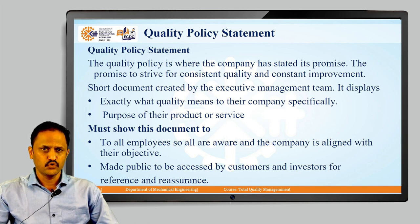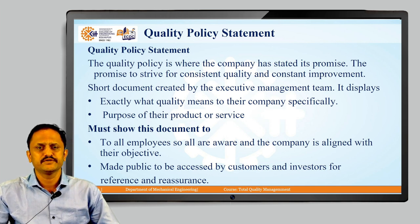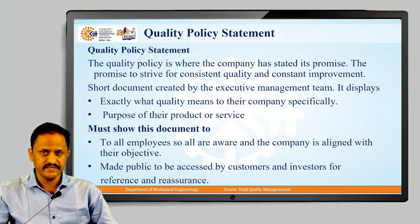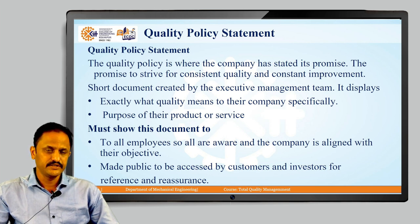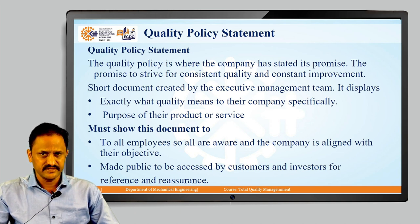What should it show and to whom should it show? Obviously, it should show this entire Quality Policy Statement to all the employees of the organization, so that all these employees should be aware about the policy of the company regarding quality and its alignment with the objectives of the company. And it should also be shown to the public — that means, the actual customers and the investors in the organization for reference and reassurance.